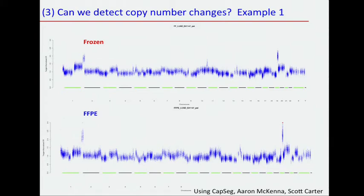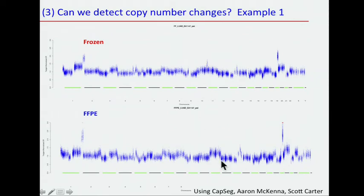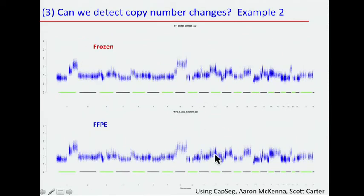Can we find copy number changes? We are using an algorithm we developed called CAPSEG that generates a segmented copy number from capture data. Every point here is a target exome. You can see the copy number — here's an example showing the frozen and the FFPE. They look pretty much the same, though there's one region that doesn't look the same, which I'll address. The noise level looks the same, so we feel we could do copy number from FFPE as well.